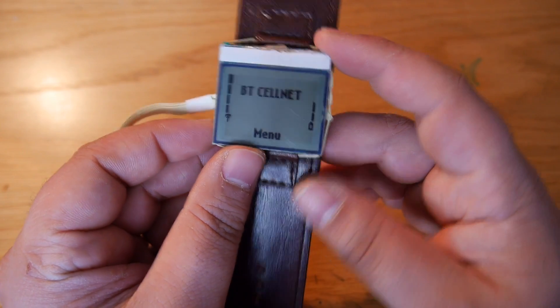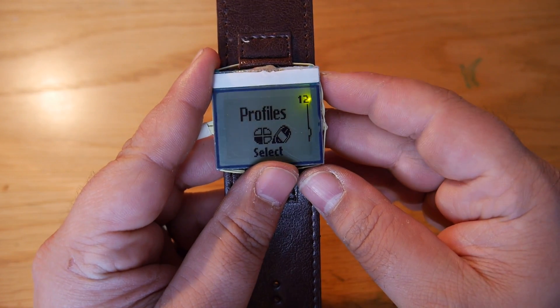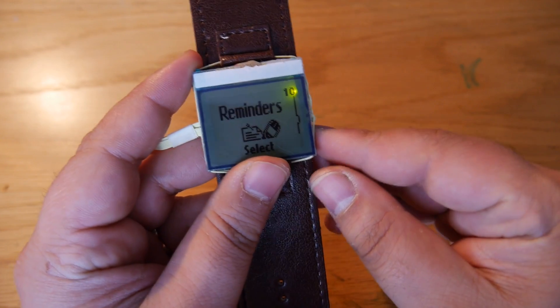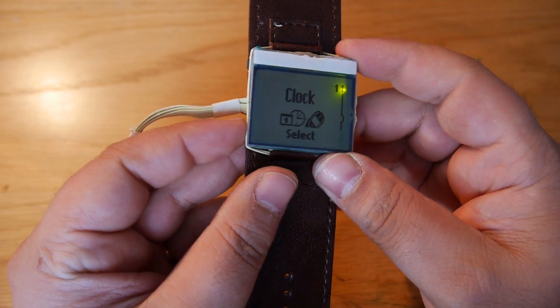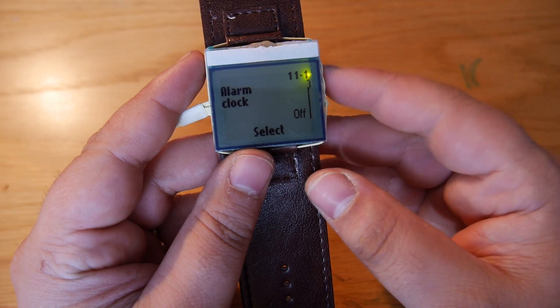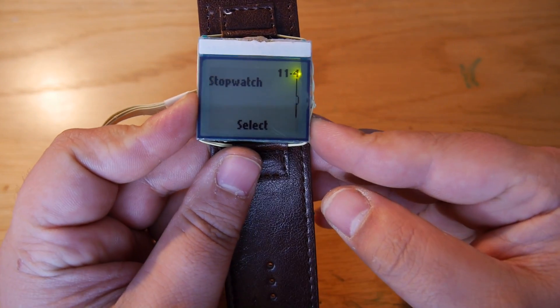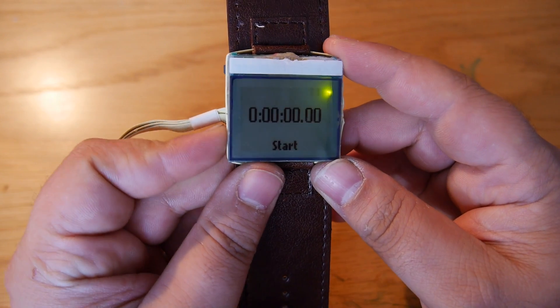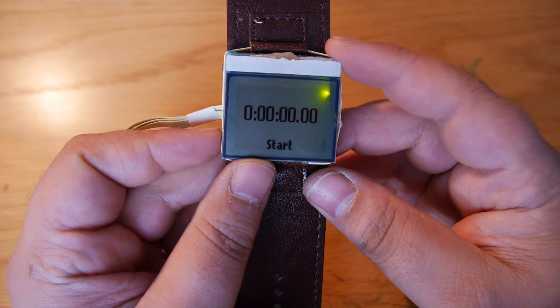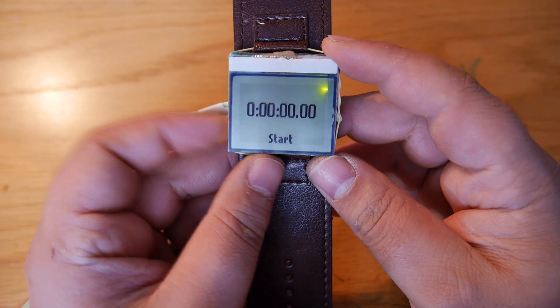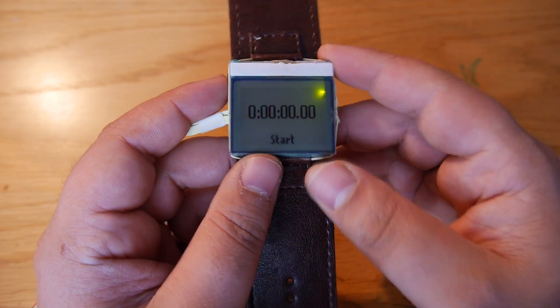So as I said this can still be used as a watch and if we go into say the clock feature you've got your select button there and your scroll button so we can just scroll down all the way to stopwatch for example and as you can see it starts and you've got your stopwatch function.